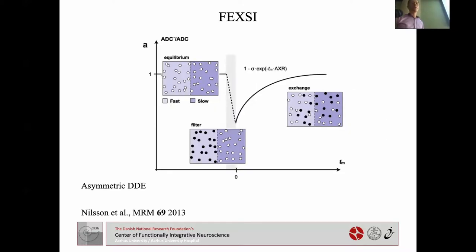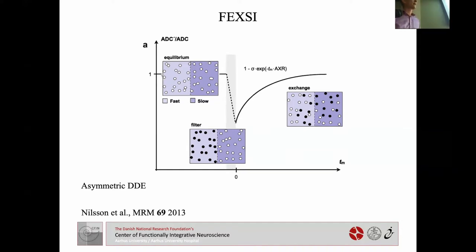A more recent modification is the asymmetric double diffusion encoding, or FEXI sequence, proposed by the Lund Group. The idea is that the first pulse acts as a filter, preferentially attenuating the fast-diffusing spins. The second pulse then measures the effective diffusion coefficient. By varying the delay between the two pulses and fitting to an exponential, you can estimate the exchange time between the two environments.